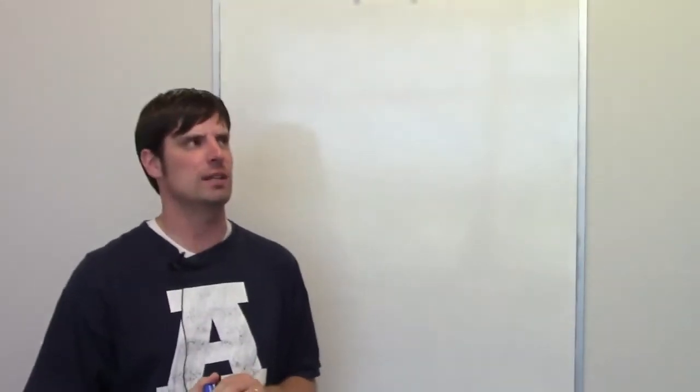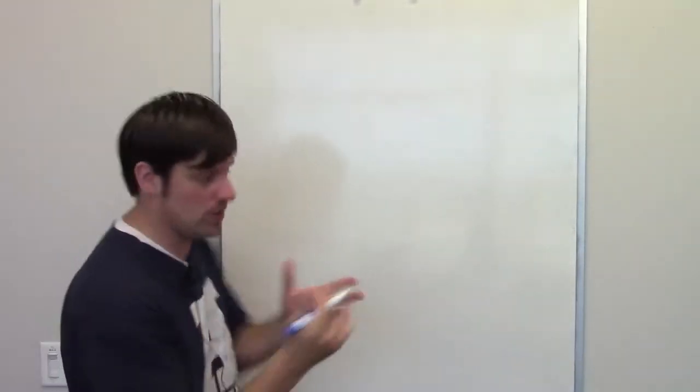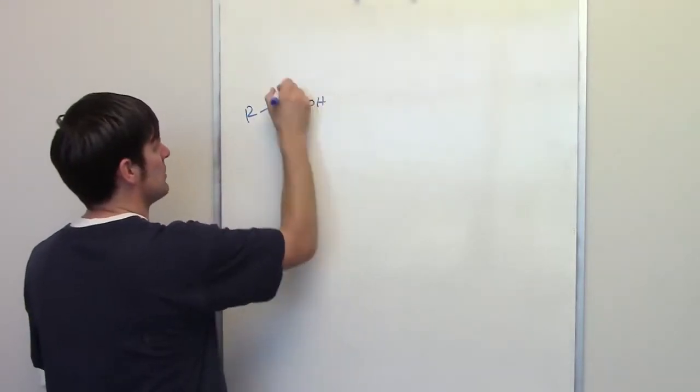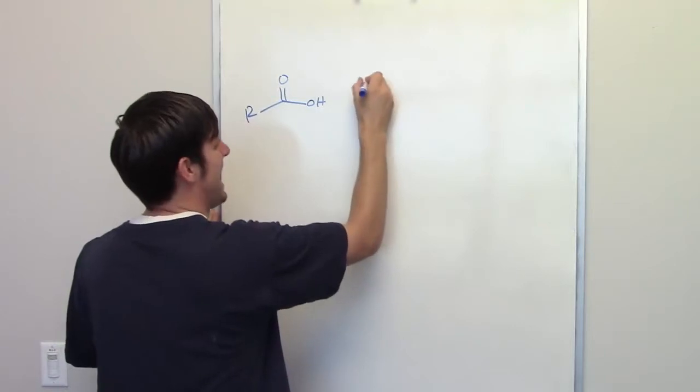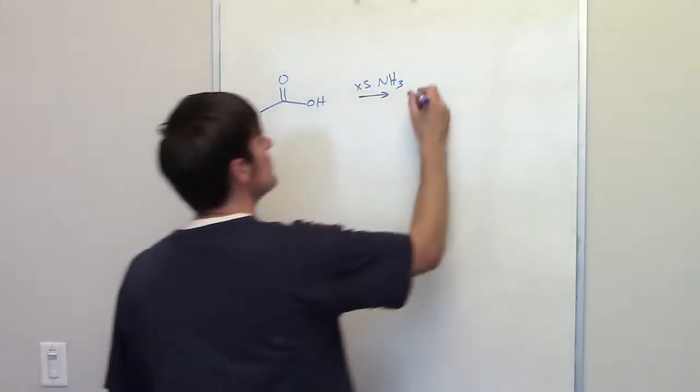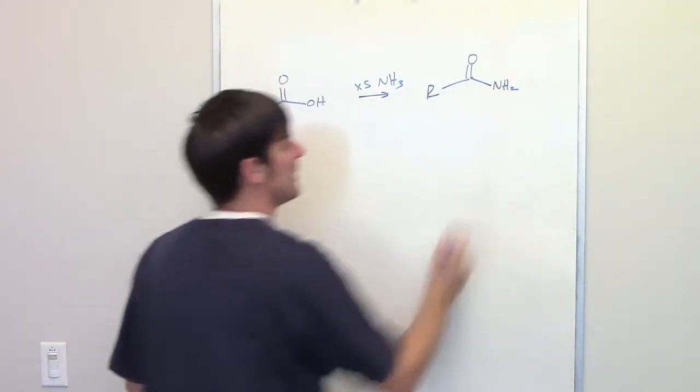Fortunately this happens to be a question that I do know the answer to, or at least I think I do, so I'm going to try my best to tackle it. Here's the rundown: I've told you guys in previous videos that if you take a carboxylic acid like this one and you expose it to excess ammonia or other amines, you can displace the OH and replace it with an NH2.